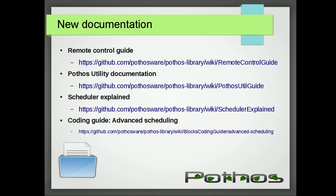We have new documentation. In my last video I did a demonstration of the remote topology feature, and so what we have now is a Remote Control Guide — a wiki page that explains how to use the proxy server, how remote topology works, and remote execution. We've also got a new wiki page documenting how to use Pothos Util, a command line app that can run unit tests, dump verbose info about the system, explore the plugin tree, and run the proxy server.